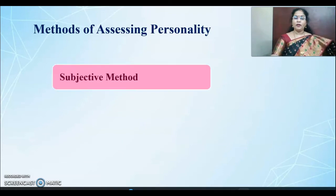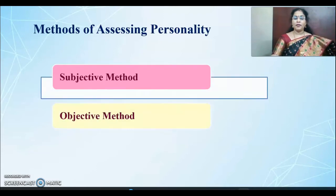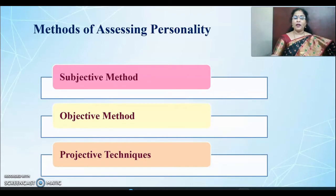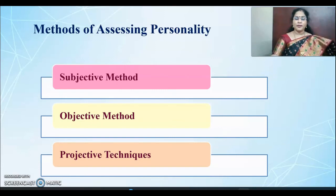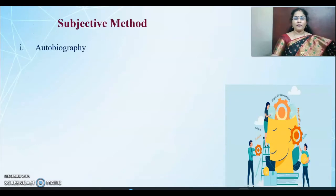Let's now learn the methods of assessing personality. There are three methods: objective method, subjective method and projective method. From the mere word subjective, it involves a lot of bias and prejudice. The objective method is very good — it goes without any bias and prejudice. The projective technique is a technique in which the person projects their personality.